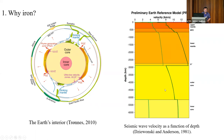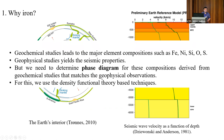Based on discontinuities in the velocity distribution, we can divide the Earth into three layers: the crust, the mantle, and the Earth's core. The core is further divided into the outer core and the inner core. The outer core has zero shear velocity, indicating it is in a liquid phase. The inner core has non-zero shear velocity, suggesting it is in a solid phase. However, geophysical studies cannot tell us the major compositions in Earth's interior — for that we use geochemical studies.